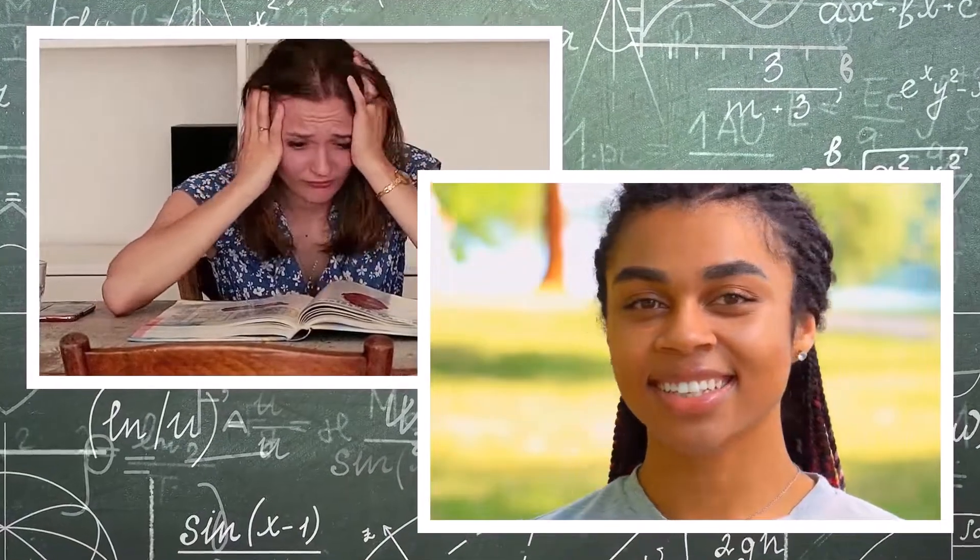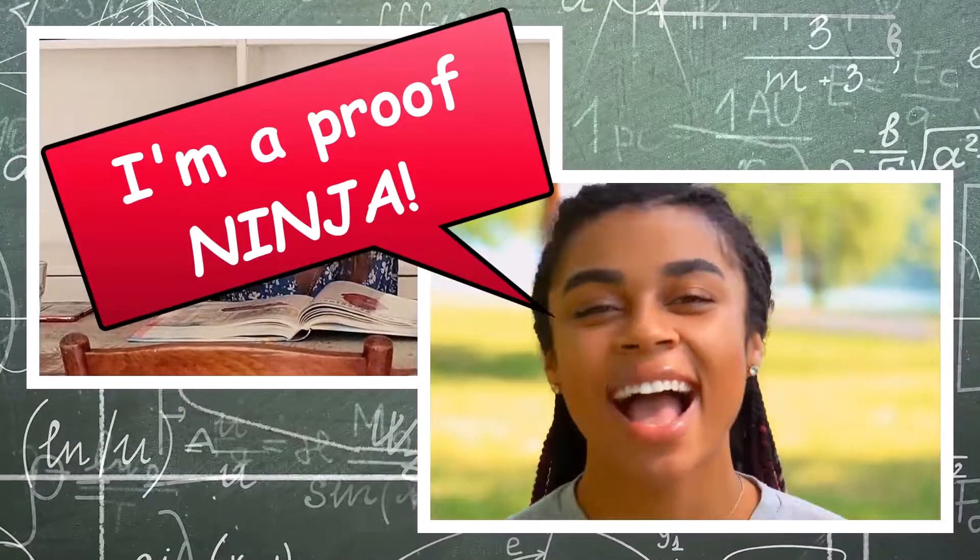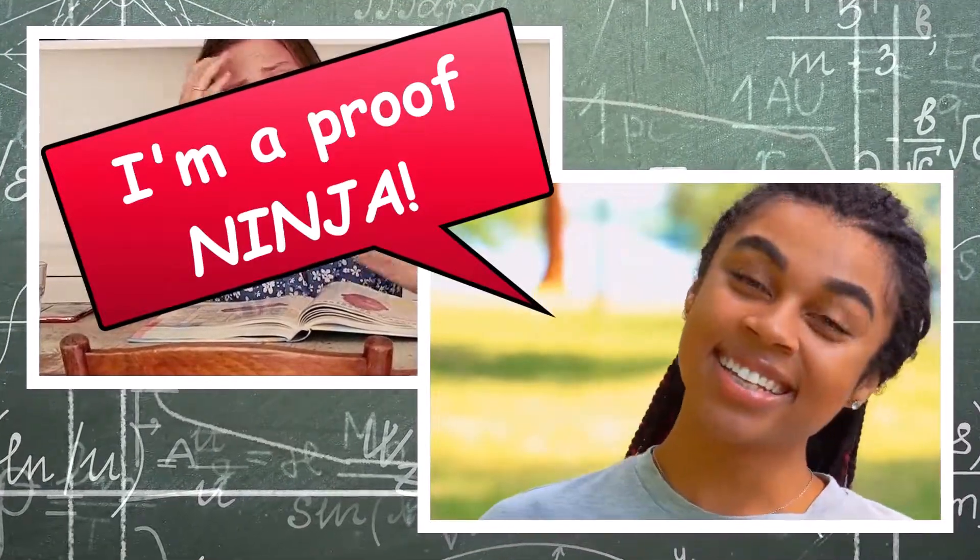Geometry proofs can be really difficult or they can be easy. The difference is whether or not you know these eight common properties that come up all the time.